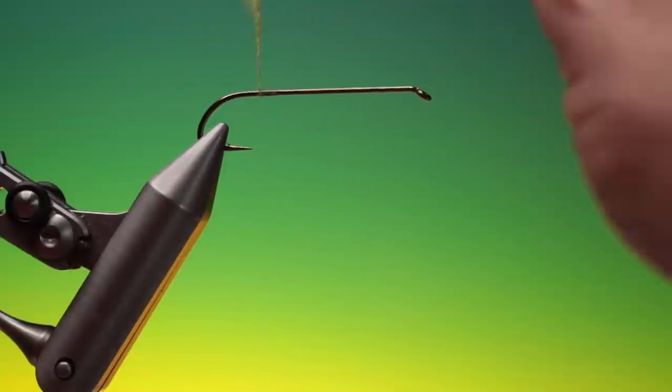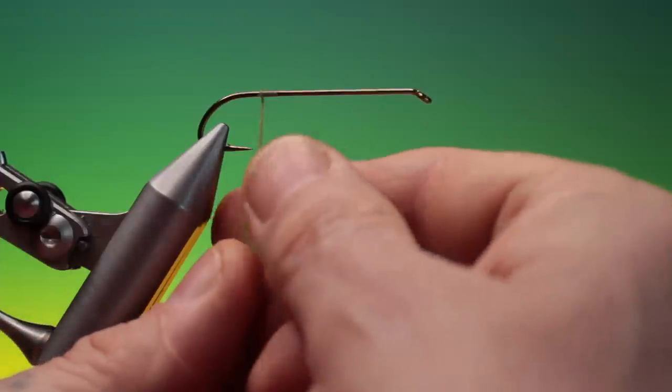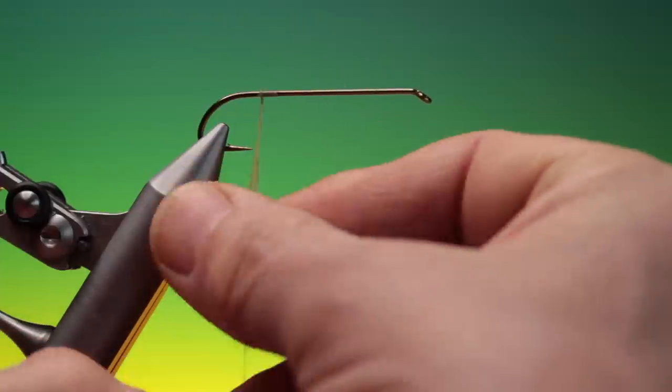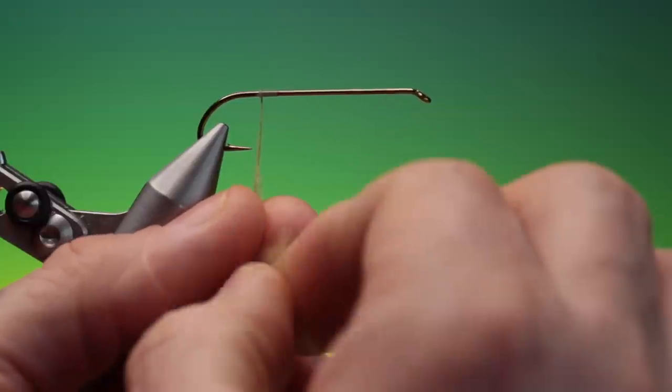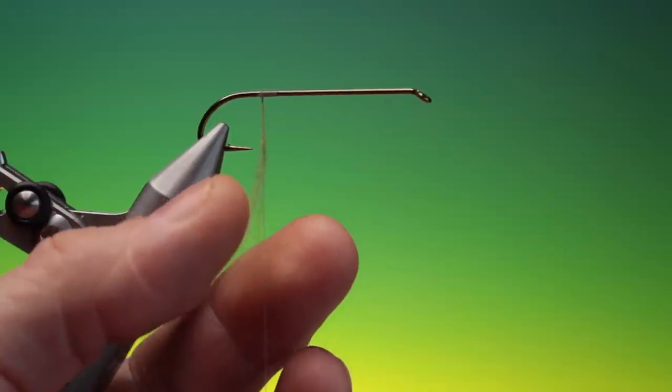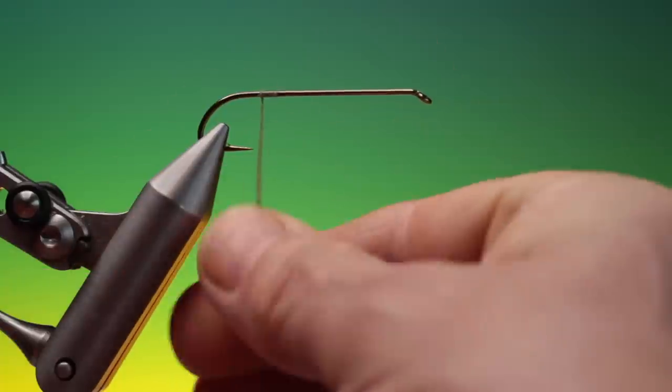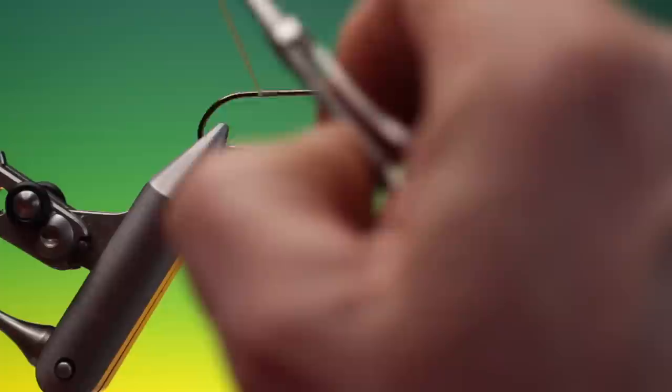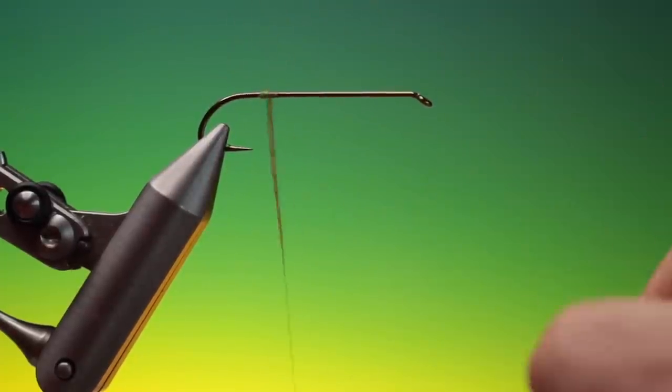And then you can catch it in a couple of times. This will stop the dubbing from spinning at the top when you start putting it further on. So we just gently roll that. This is your standard dry fly dubbing for a standard dry fly body.